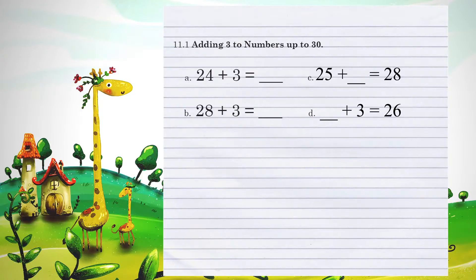Example A, 24 plus 3. You can think of this as just a number line again and just go three spots past 24. So 24 to 25 to 26 to 27 gives us an answer of 27.